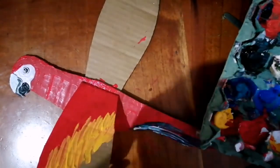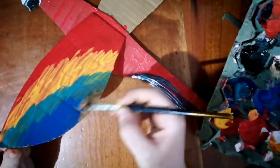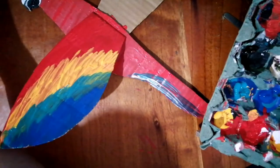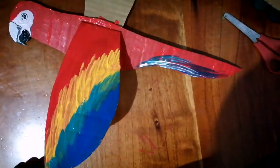But first you want to do the top wing, add some red, then the yellow and then the blue section at the end. Do exactly the same on the other side once this is dry.